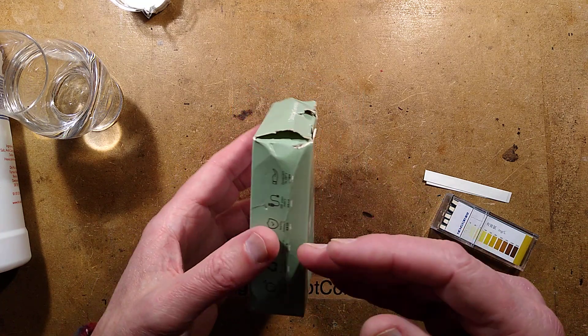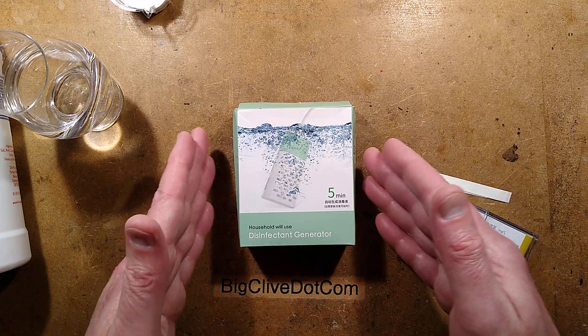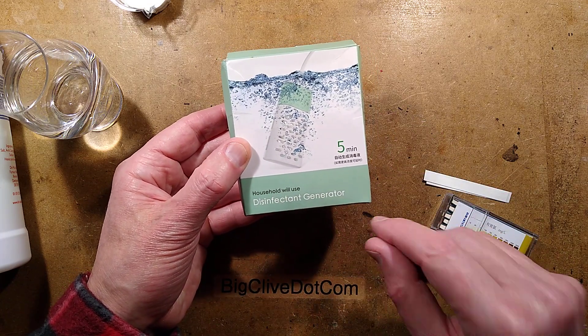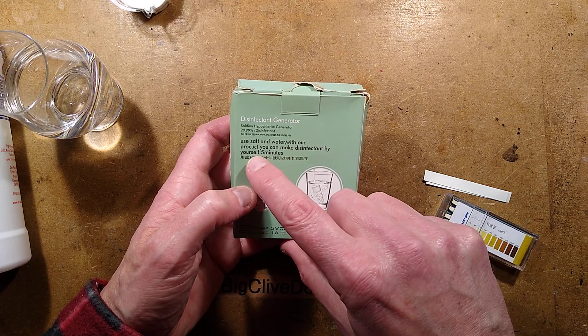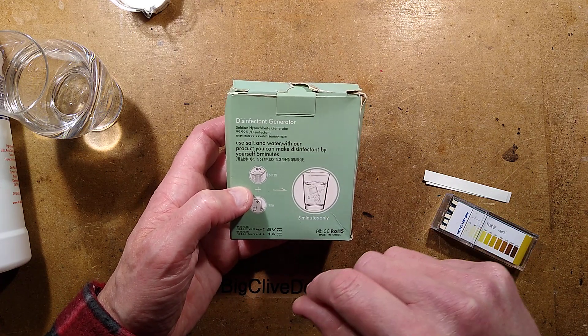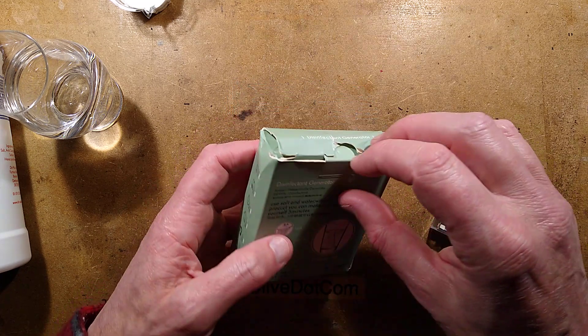At the same time I ordered a few different ones from eBay but I didn't want to make too many videos about the same thing, so now it's time to take a look at another one. This one is called the Household Will Use Disinfectant Generator. Five minutes use salt and water with our product you can make disinfectant by yourself. Five minutes excellent sodium hypochlorite generator 99.99% disinfectant.